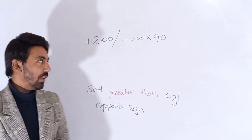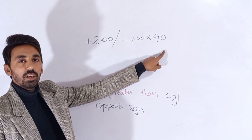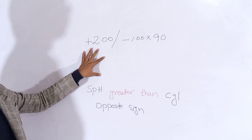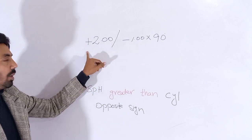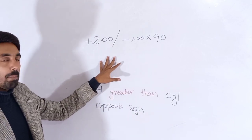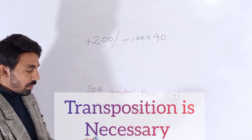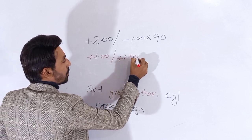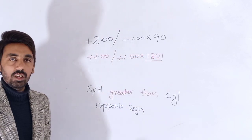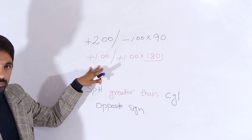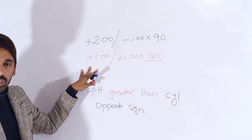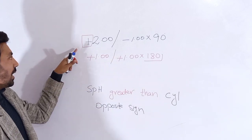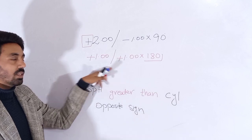Now we have another example of a toric prescription: plus two sphere with minus one cylinder at 90 degrees. Here the spherical correction is greater than the cylindrical correction but with opposite signs — plus two spherical greater than minus one cylinder. If you find any prescription like this, it is called compound astigmatism and we need to transpose it. After transposition we get plus one sphere with plus one cylinder at 180 degrees. This is compound hyperopic astigmatism. Whether it is compound hyperopic or compound myopic depends on the sign of the spherical correction. Since we have a plus sphere, this prescription is compound hyperopic astigmatism.